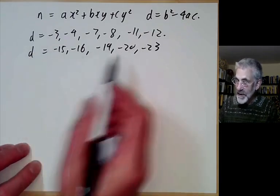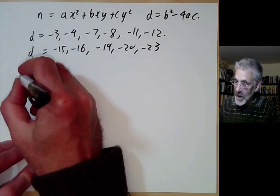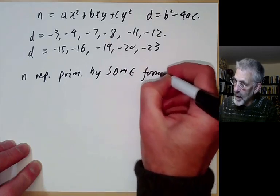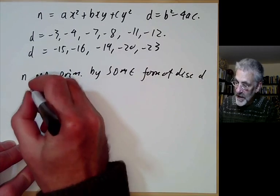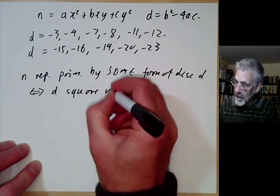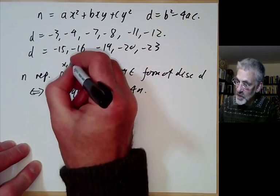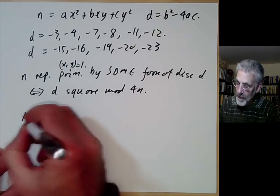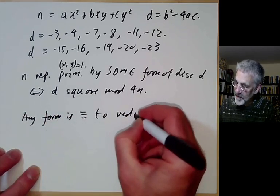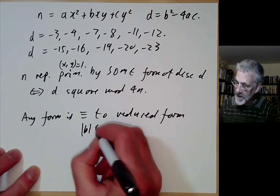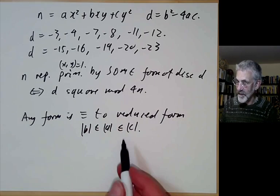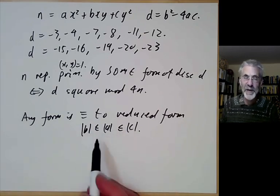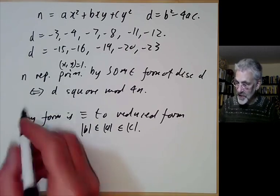Before doing these cases I'll quickly recall the results we use. First, n is represented primitively by some form of discriminant d if and only if d is a square mod 4n — remember, primitive means gcd(x, y) = 1. The other result we used is that any form is equivalent to a reduced form which satisfies |b| ≤ a ≤ c. If |b| equals a, or if a equals c, there's some minor condition about b being at least zero.